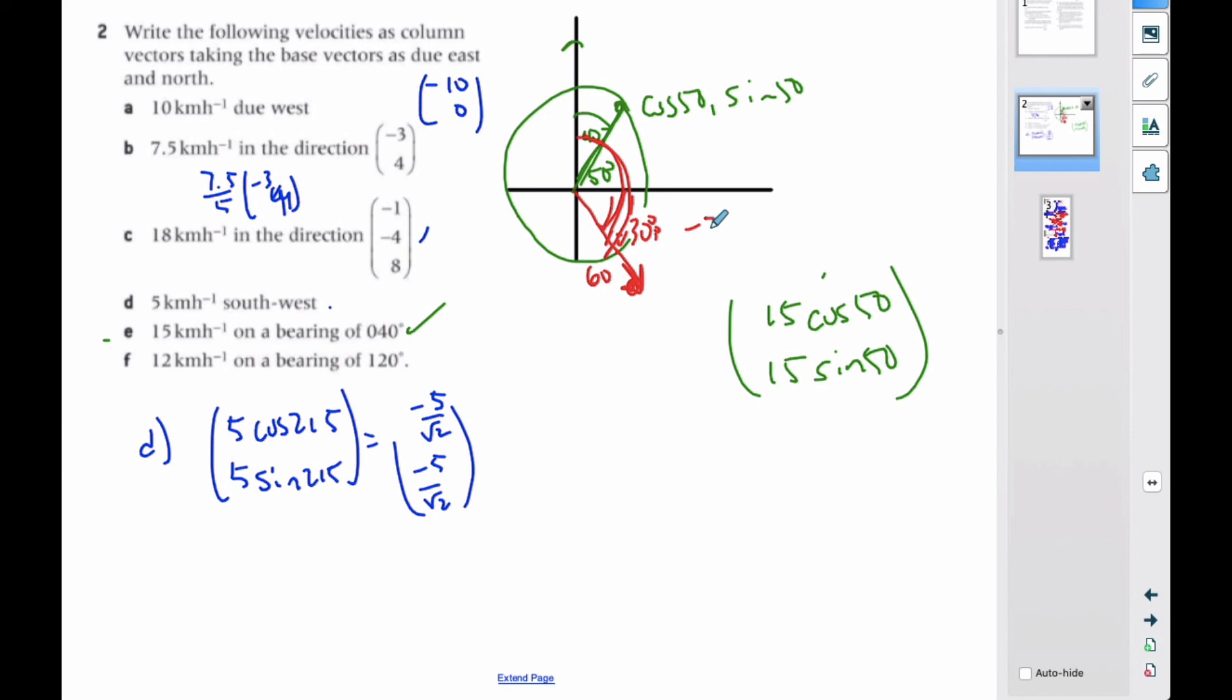So, I could make this negative 30 degrees, or I could go 300 degrees. And again, it's going to be 12 kilometers, the cosine then of negative 30, and the sine of negative 30.